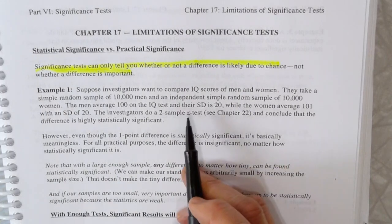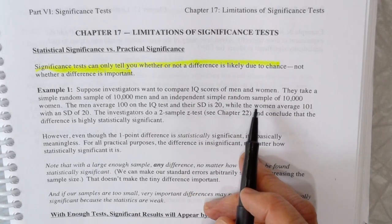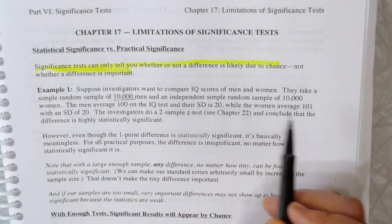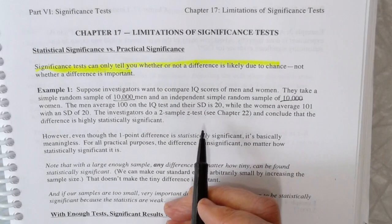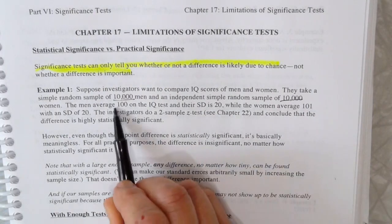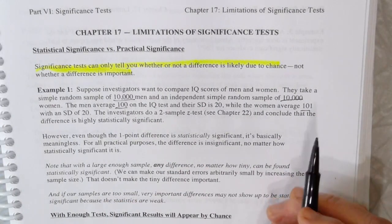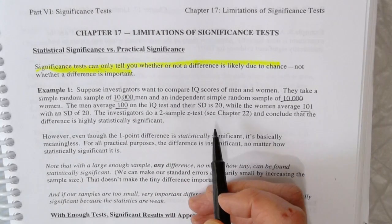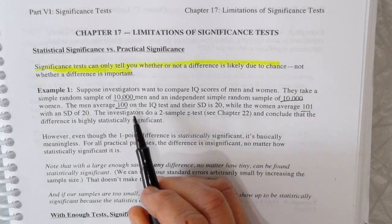So here's an example. Suppose we wanted to compare IQ scores of men and women, and so we take a random sample, this huge sample of 10,000 men and 10,000 women, and we find this difference in their IQs of 100 versus 101. Well, 1 point, we don't really care about a 1 point difference, but it would be statistically significant just because our sample sizes are so big.